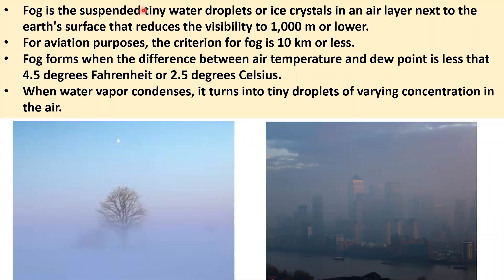Fog is a suspension of tiny water droplets or ice crystals in an air layer next to the earth's surface that reduces visibility to 1000 meters or lower. For aviation purposes, the criteria for fog is 10 kilometers or less. Fog forms when the difference between air temperature and dew point is less than 4.5 degrees Fahrenheit or 2.5 degrees Celsius. When water vapor condenses, it turns into tiny droplets of varying concentration in the air.